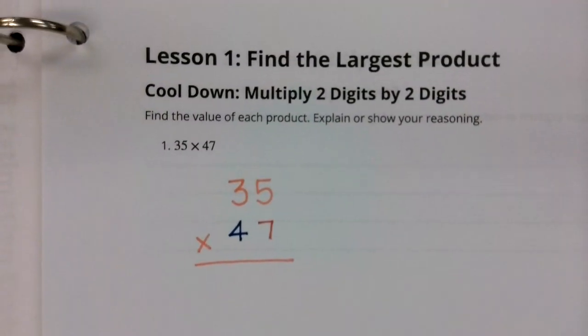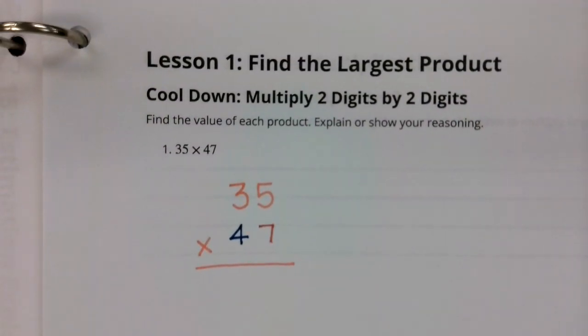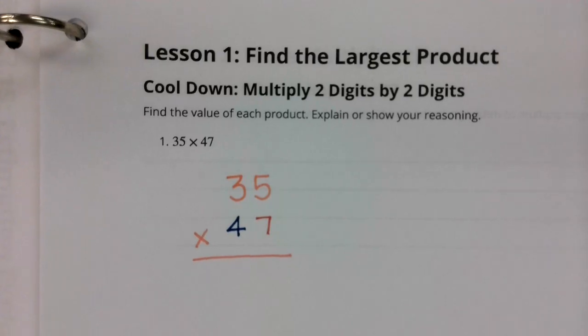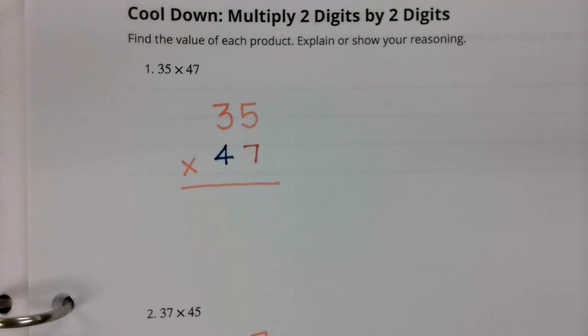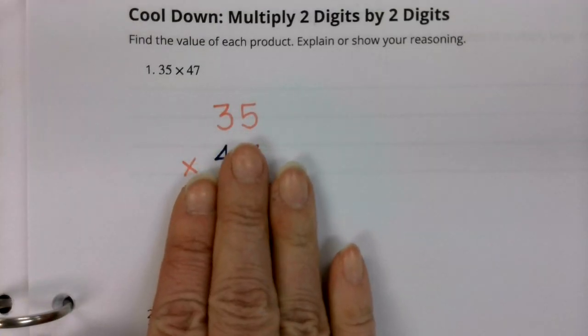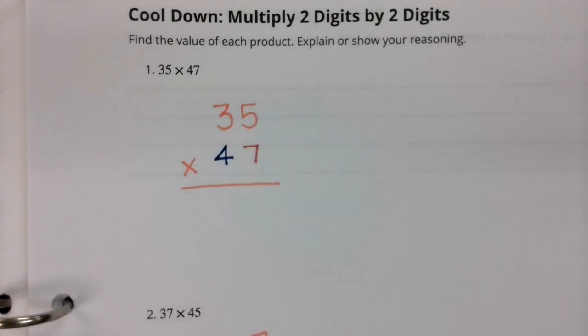Good morning mathematicians. We are looking at lesson one from unit eight. Our cool down is about multiplying two digit by two digit numbers. We are beginning here with 35 times 47.